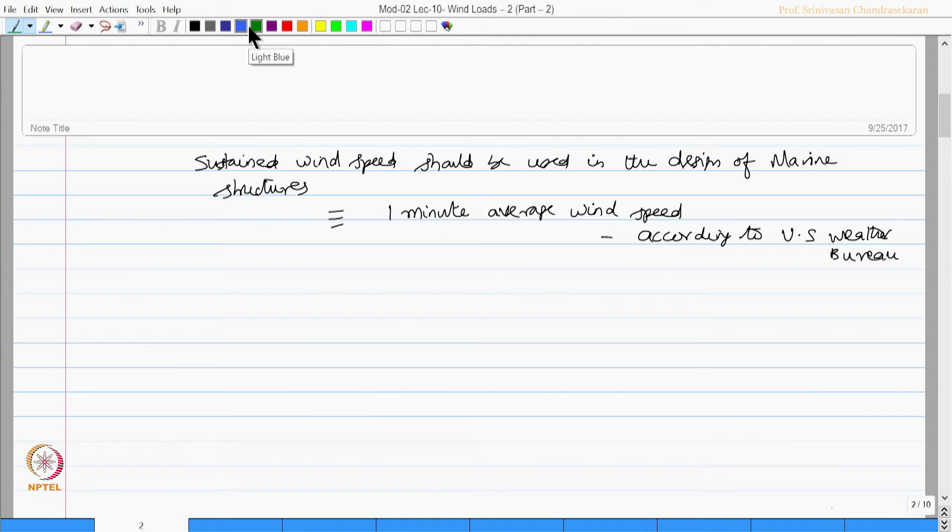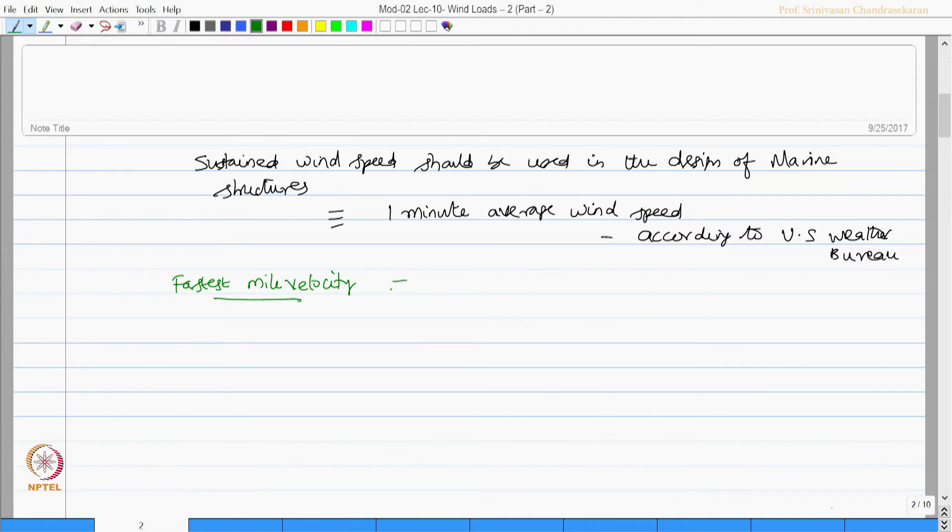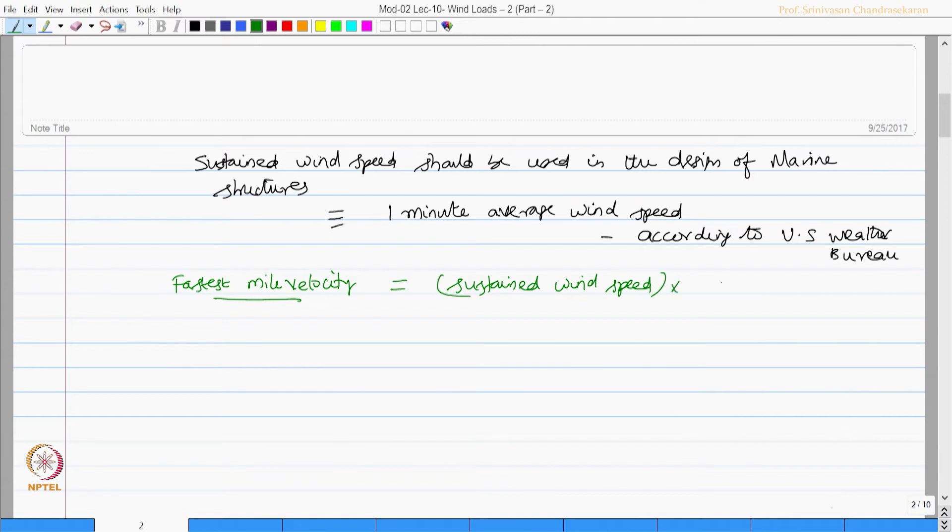Another term which is commonly used in the design is called fastest mile velocity. This is actually equal to sustained wind speed multiplied by the gust factor.